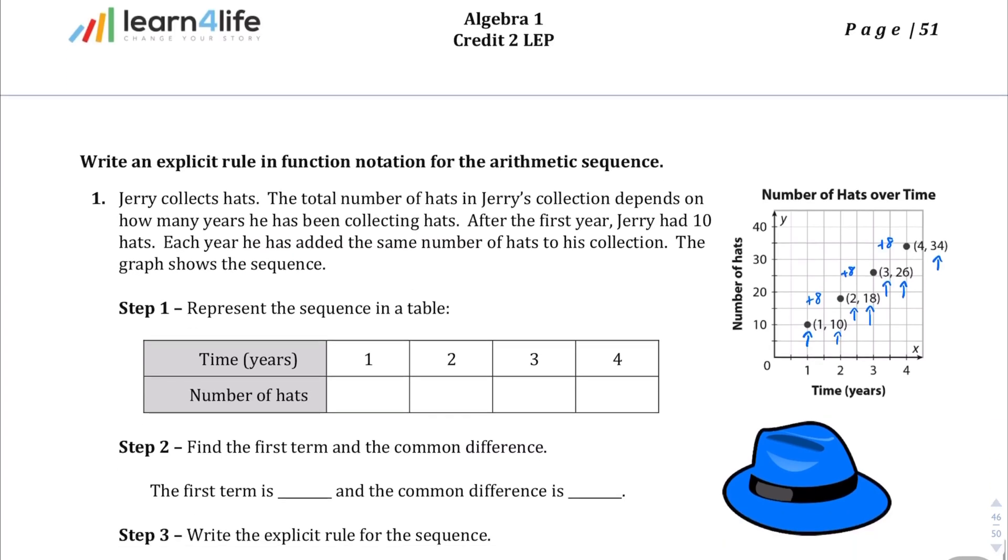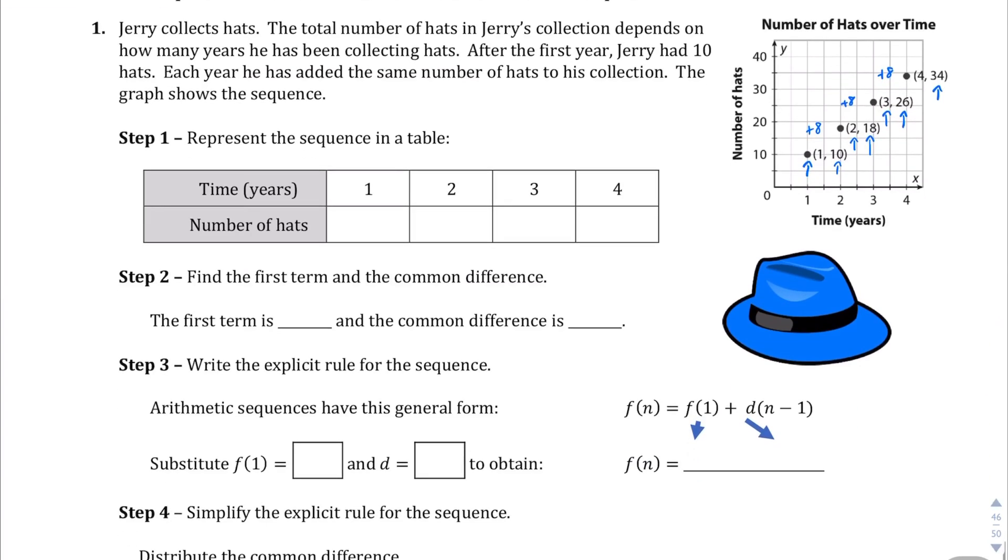If we represent that sequence in a table, the first year he has 10 hats. The second year, he has 8 more, which is 18. The third year, he has 8 more than that, which is 26. And lastly, the fourth year, he has 34. Those values should be the same as the ones in the graph.